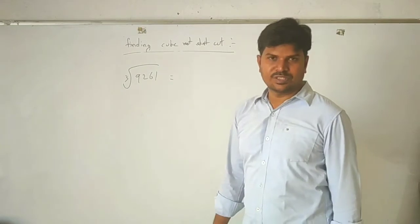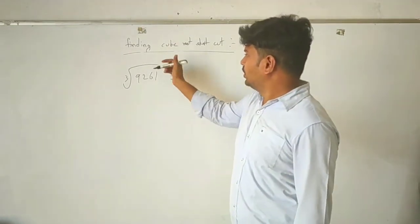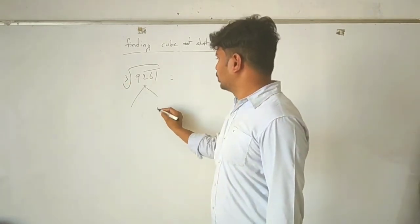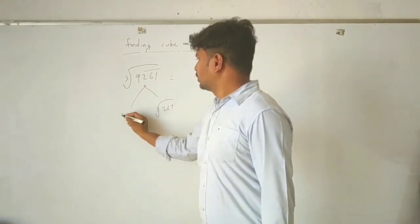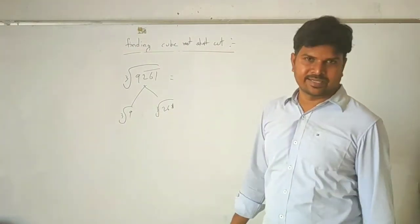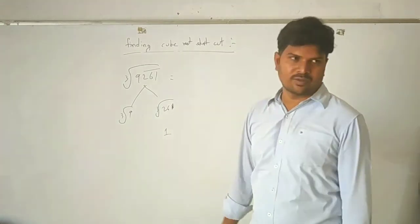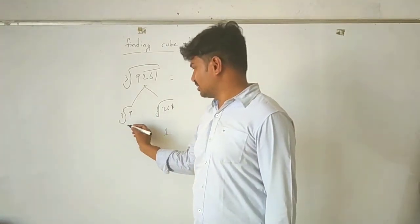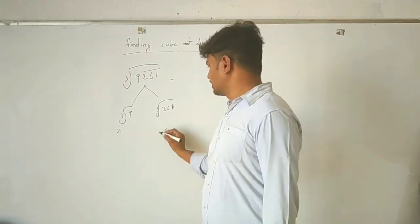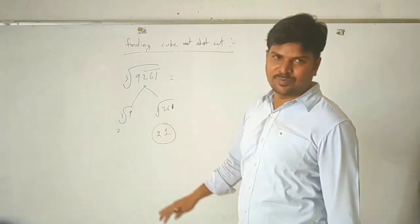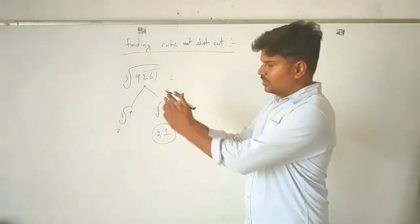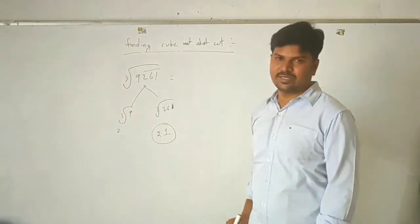Same shortcut for cube root: since it is a cube, take the first three digits as one group and the remaining digits as another group. For example, cube root of 9261: split into cube root(9) and cube root(261). There is no confusion for unit digit in cubes. Unit digit 1 means the cube root's unit digit is 1. Cube root of 9 is approximately 2 point something, so take 2. The answer is 21. Only two steps are required — no need to compare.